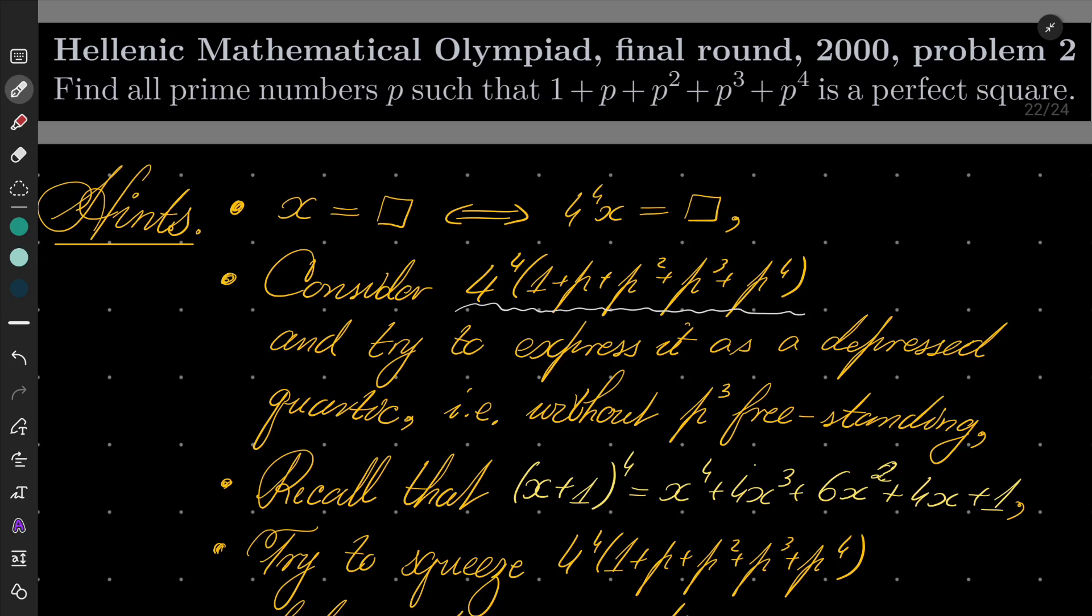To do that, it might be helpful to recall the binomial theorem, special case of the binomial theorem, namely that x plus 1 to the 4th power expands as x to the 4th plus 4 times x cubed plus 6x squared plus 4x plus 1.